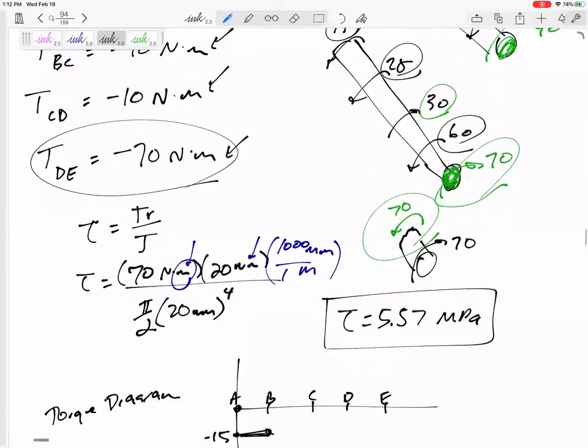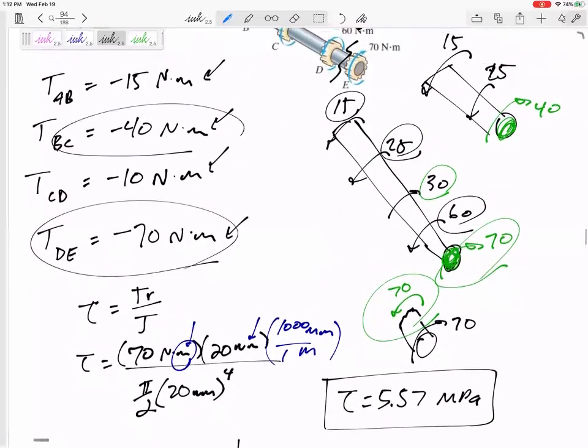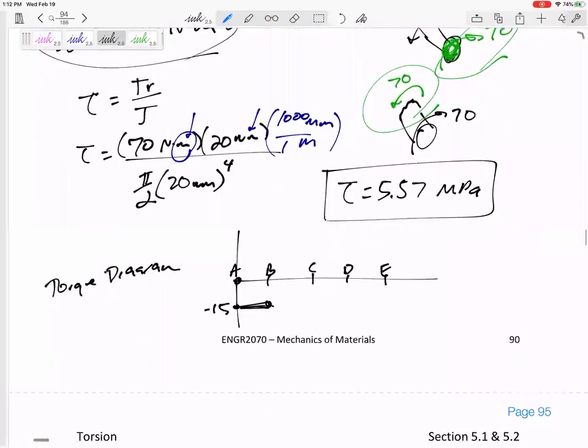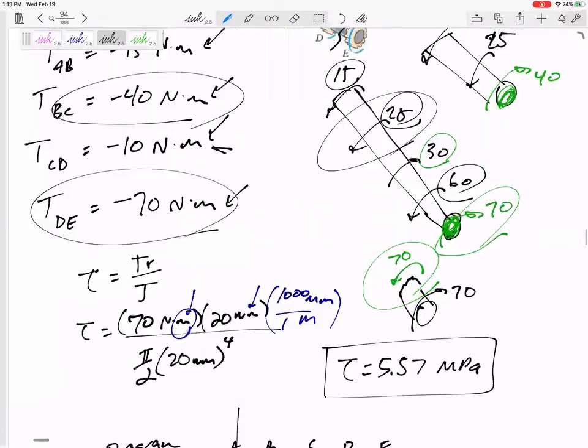And then at B, due to this 25 Newton meter torque, it goes down to negative 40. And then at C, we calculated that it goes back up to 10.